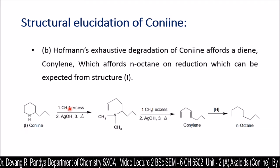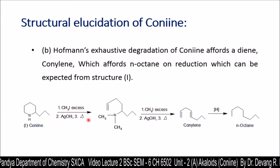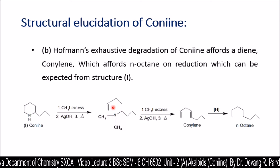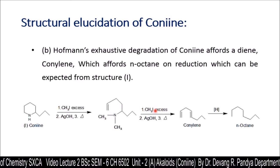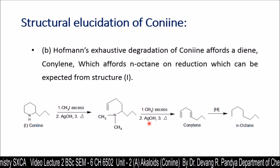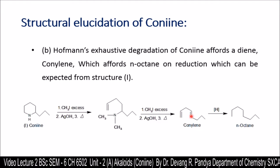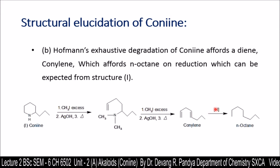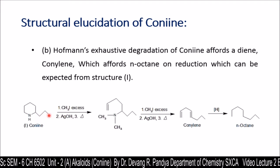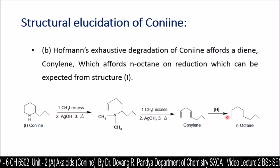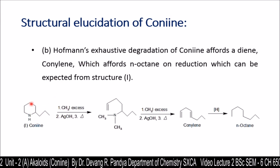Conine treated with excess methyl iodide in the presence of silver hydroxide, on heating, gives a ring-opening reaction. This is further treated with methyl iodide — as it is an exhaustive methylation process — followed by treatment with silver hydroxide. On heating, we get coniline, which is a diene, and that diene on reduction gives n-octane. Only the conine with a normal propyl chain can give n-octane, and that is why the Hofmann degradation also proves that conine has structure 1.